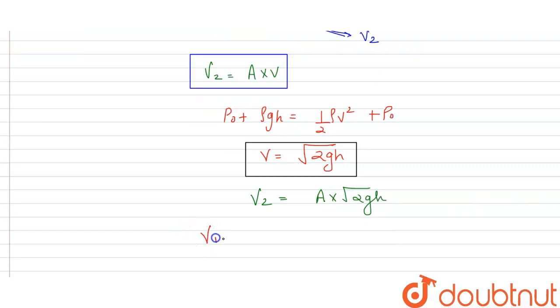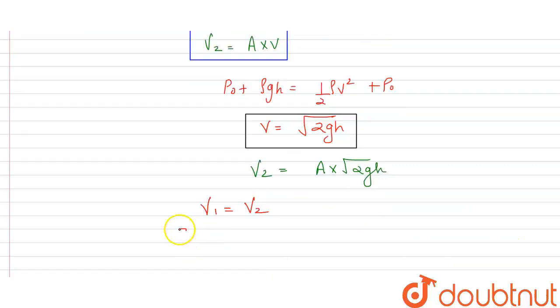If we apply the condition here V₁ equals V₂, then V₁ is 70 cm³/sec equals V₂, which is area 1 cm² × √(2gh).